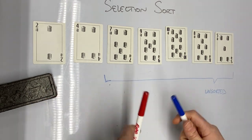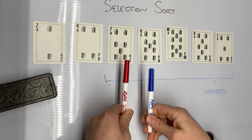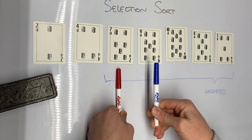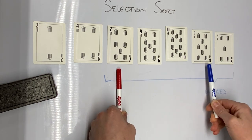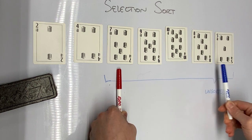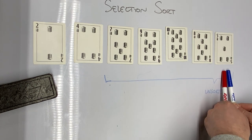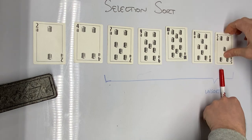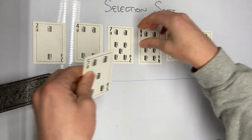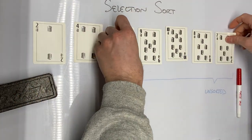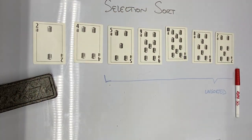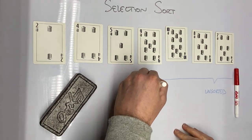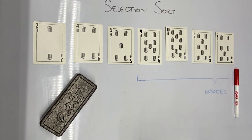We scan through again. The seven is currently the smallest card — not nine, not ten, not eight. Five is less than seven, so five is our smallest card. Therefore we're going to swap the five with the card at the beginning of the unsorted region, which is the seven, and the unsorted region shrinks again.